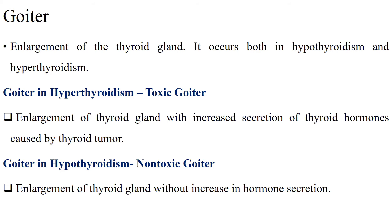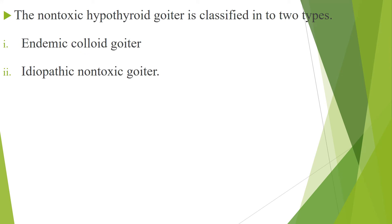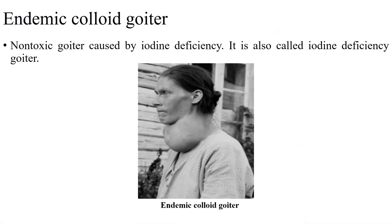Goiter means enlargement of the thyroid gland. It occurs both in hypothyroidism and hyperthyroidism. Goiter in hyperthyroidism is called toxic goiter — enlargement of the thyroid gland with increased secretion of thyroid hormones caused by a thyroid tumor. Because of the increased number of hormone-secreting cells of the tumor, the hormone level increases greatly. Goiter in hypothyroidism is non-toxic goiter — enlargement of the thyroid gland without increase in hormone secretion. Based on the cause, non-toxic hypothyroid goiter is classified into endemic colloid goiter and idiopathic non-toxic goiter.